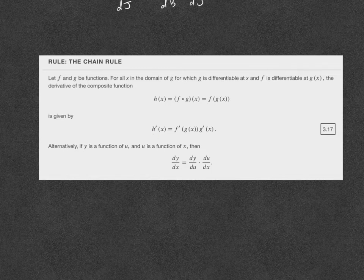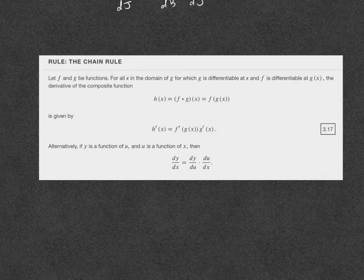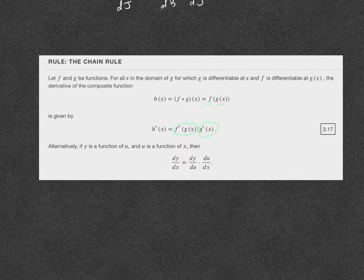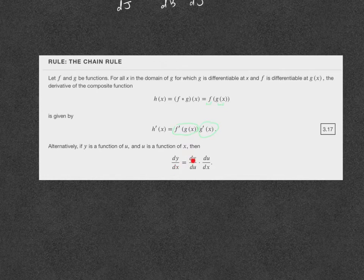H prime of X is F prime of G of X times G prime of X. We can think of F prime of G of X as the derivative of the outer composite function, and G prime of X as the derivative of the inner function — composite meaning they're nested. Using Leibniz notation, dy/dx equals dy/du times du/dx: the rate of change of y with respect to x is the rate of change of y with respect to u times the rate of change of u with respect to x. I'll go through both notations.